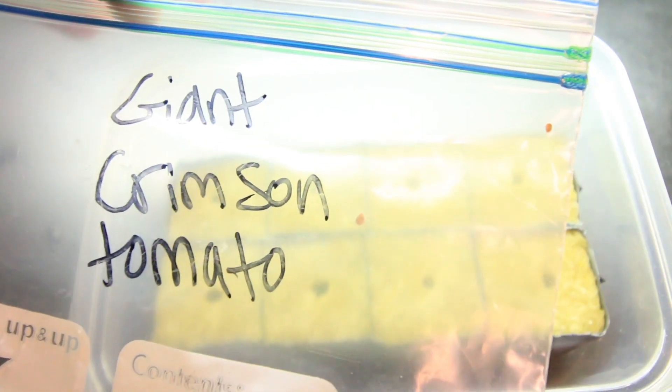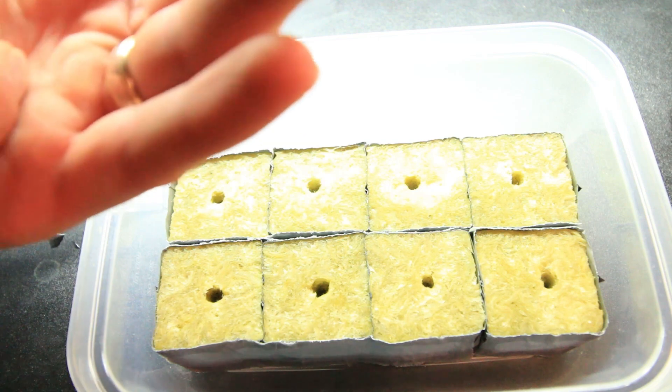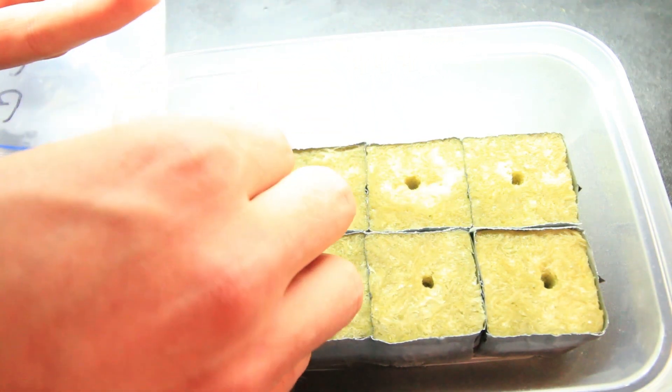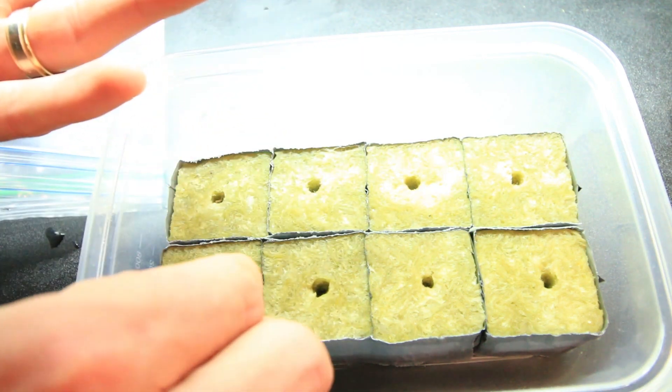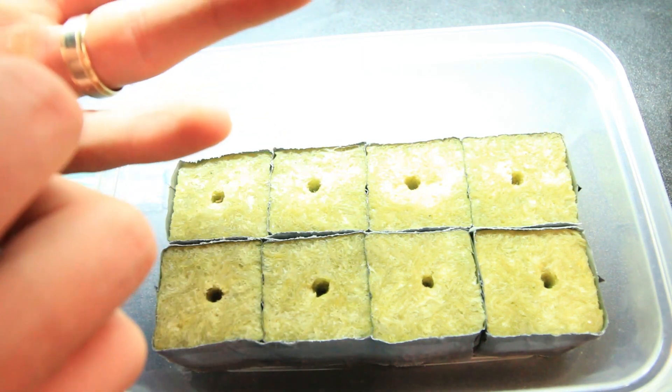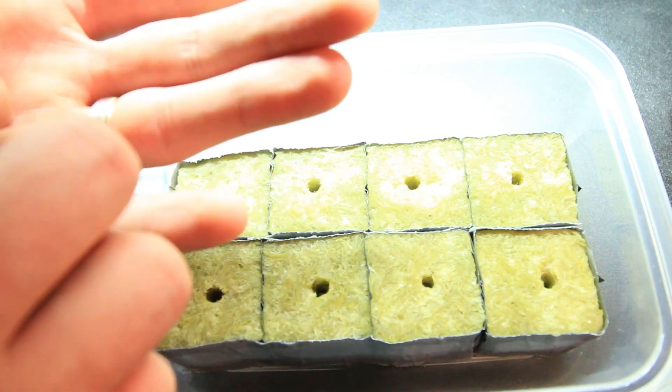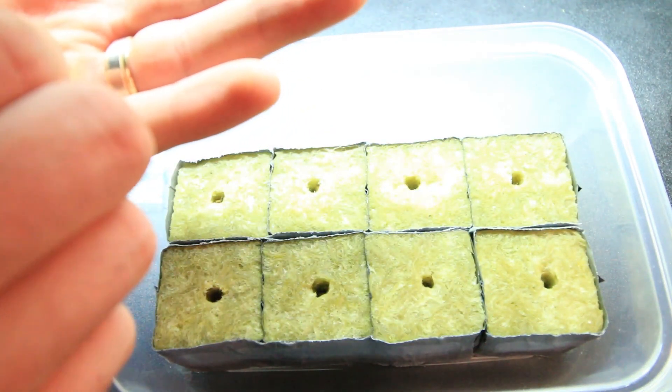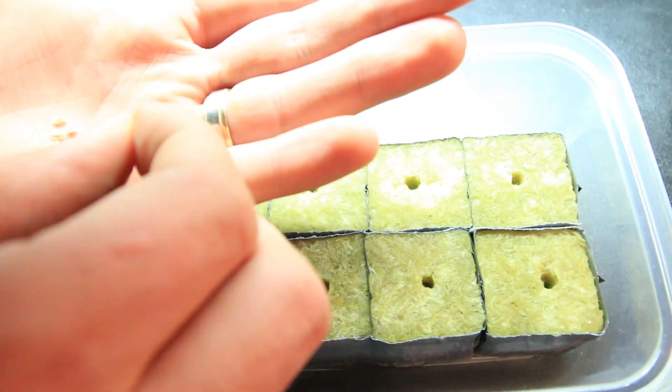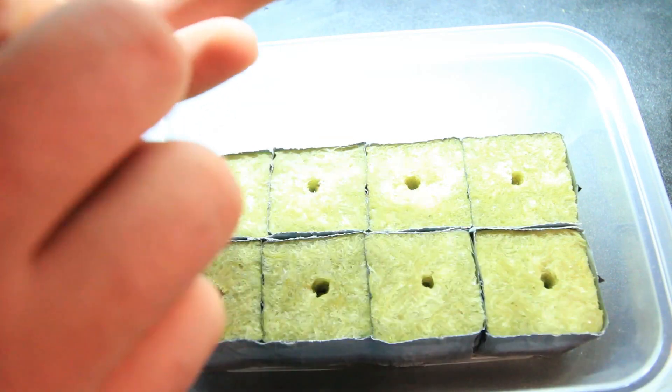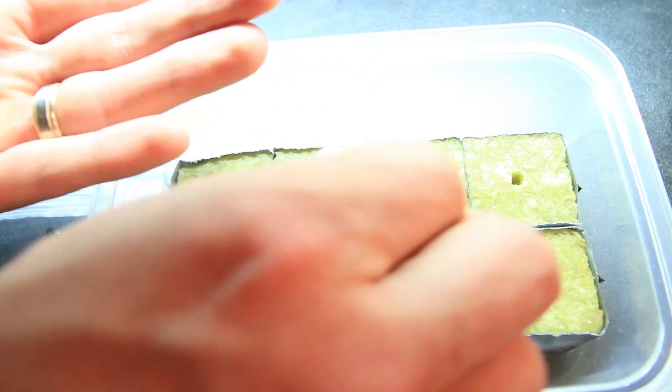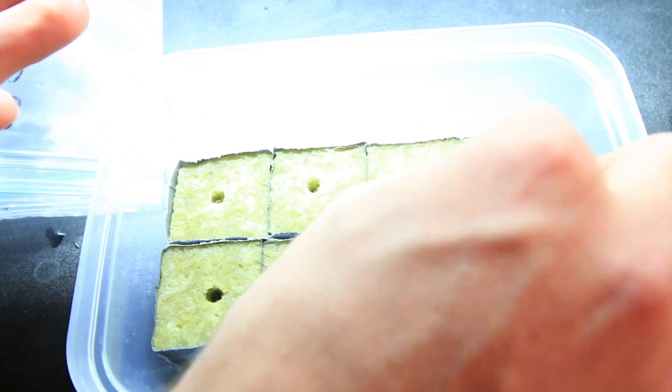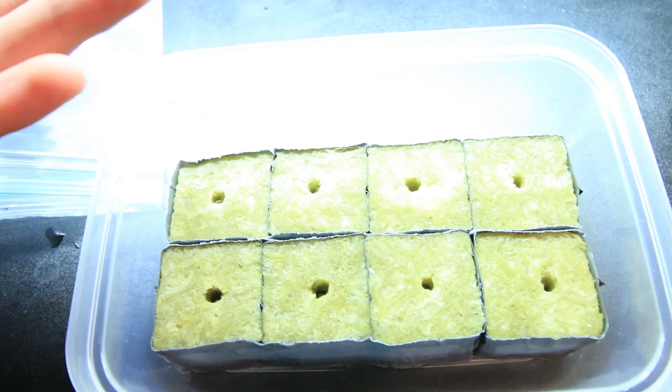The first thing we're going to start are the giant crimson tomatoes. I am going to take two seeds and put them in each block. This will mean I will have to thin. I know I'm already hearing the shrieks, but it's really important to pick the healthiest seedling. So I'm just dropping in two seeds per hole. That way I have the best chance of having a hundred percent success and so that I can select the healthiest of the ones that germinate.